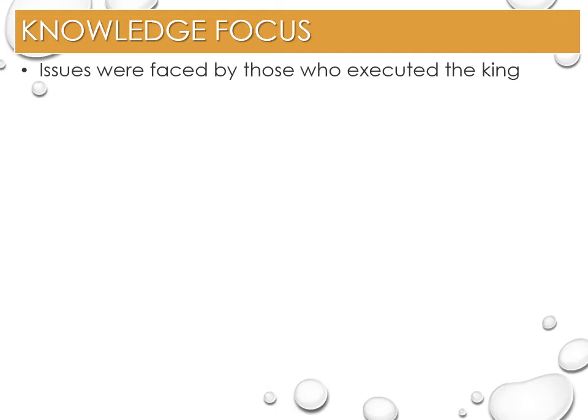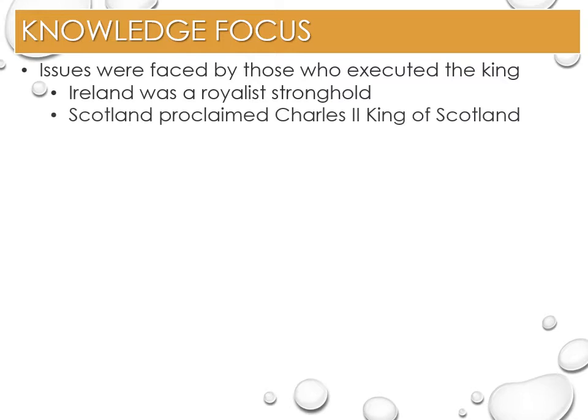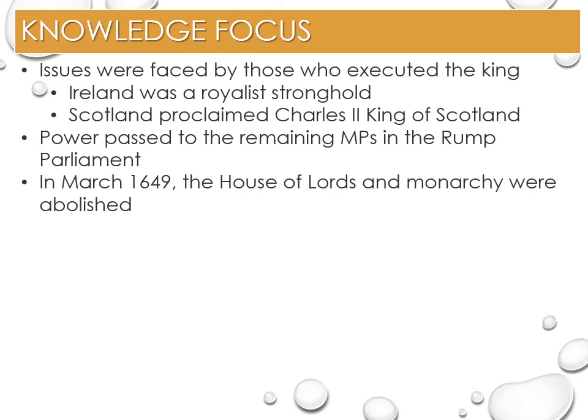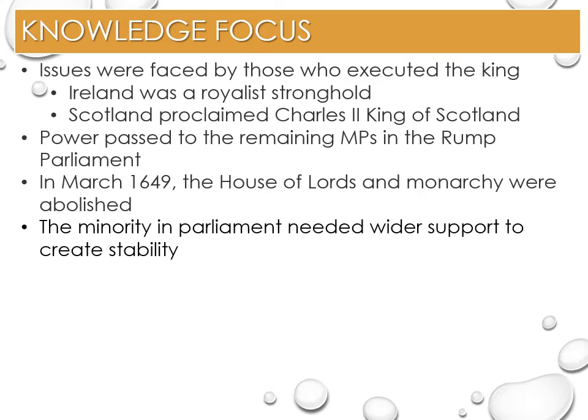For those who executed Charles I, they faced issues with establishing a government to replace him. Ireland was a royalist stronghold with a Catholic army ready to fight for the king, and Scotland proclaimed Charles II King of Scotland, even though he was in exile in Holland and was not crowned until 1651. Due to the political uncertainty, power passed to the remaining MPs in the Rump Parliament, which continued to shrink in size when the Lords did not return. The Rump declared itself the sole authority and a Council of State was elected. In March 1649, the House of Lords and Monarchy were abolished and England was declared to be a Commonwealth governed by a single chamber parliament.